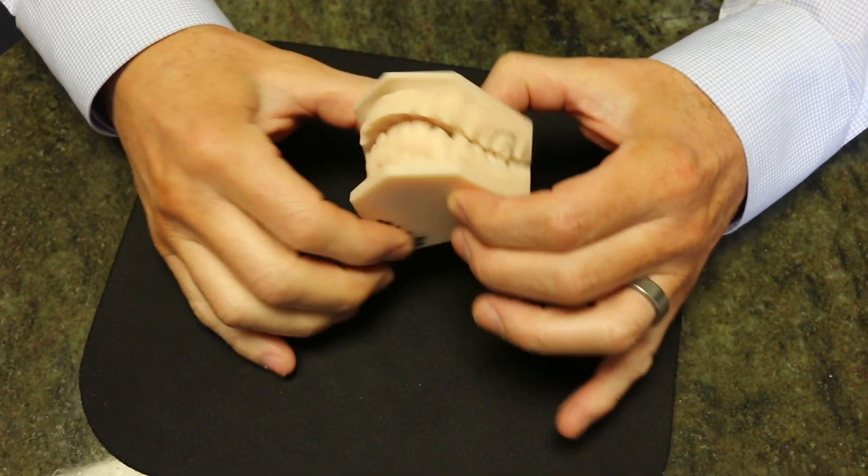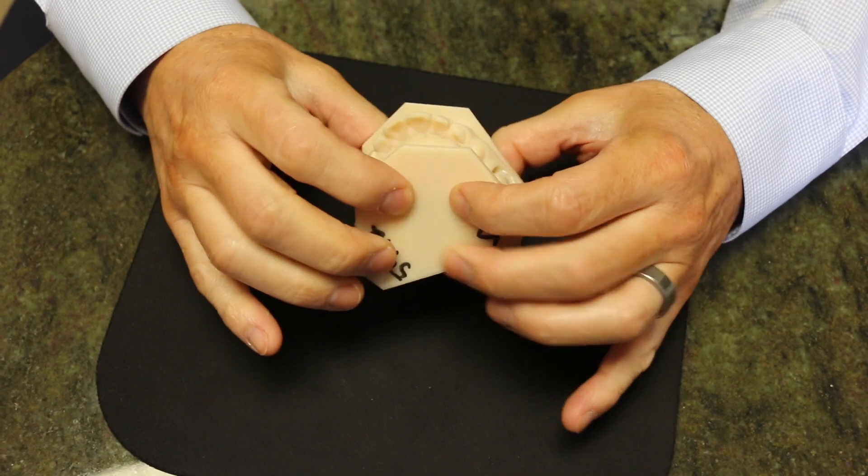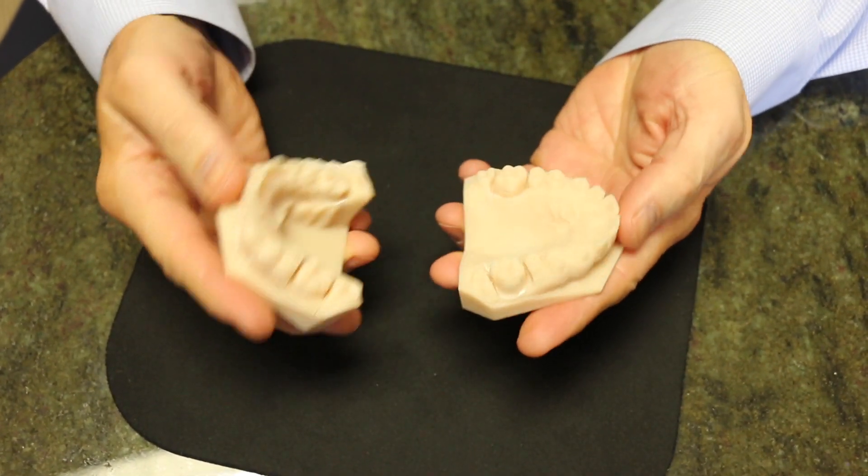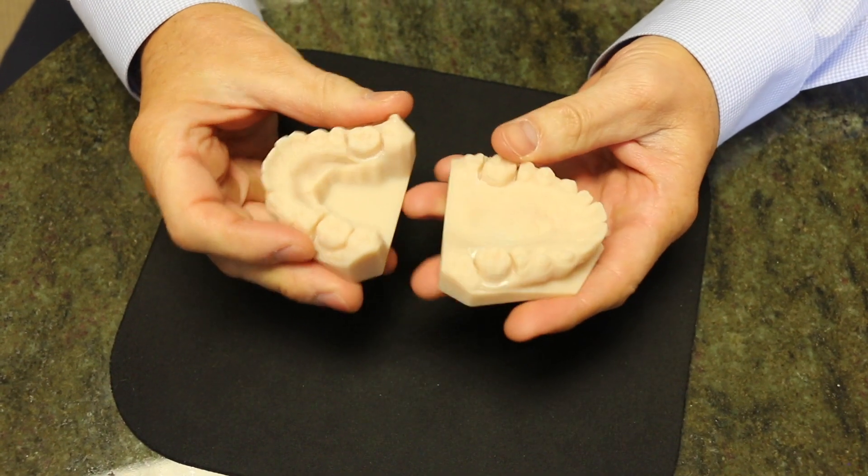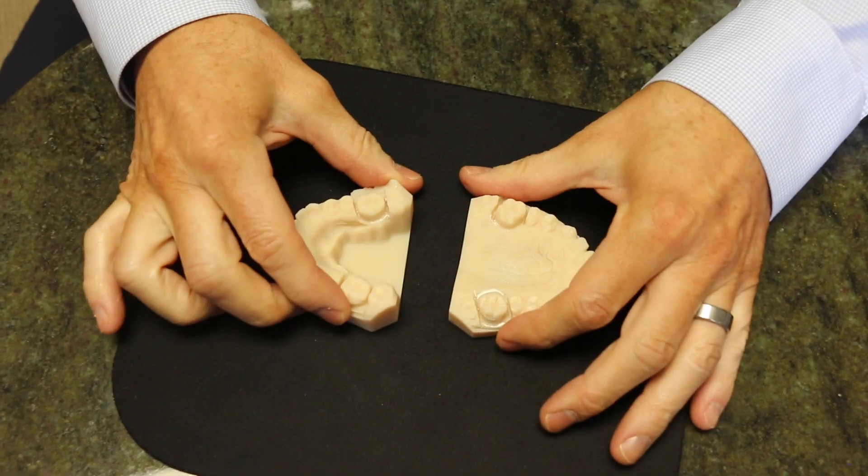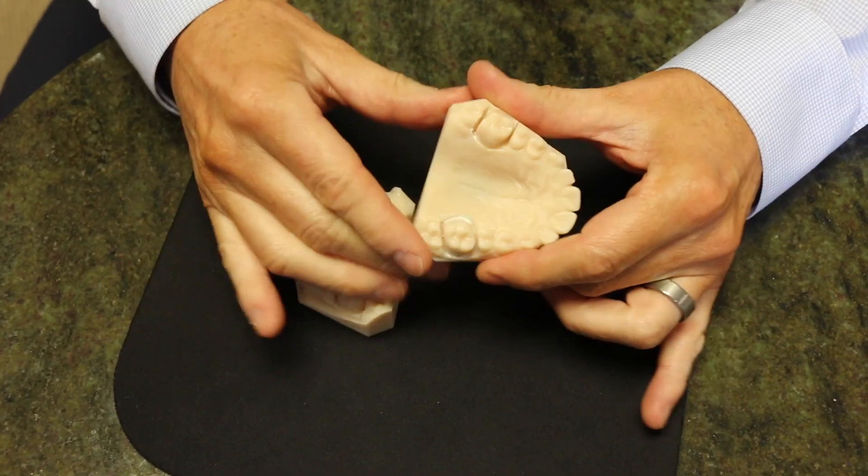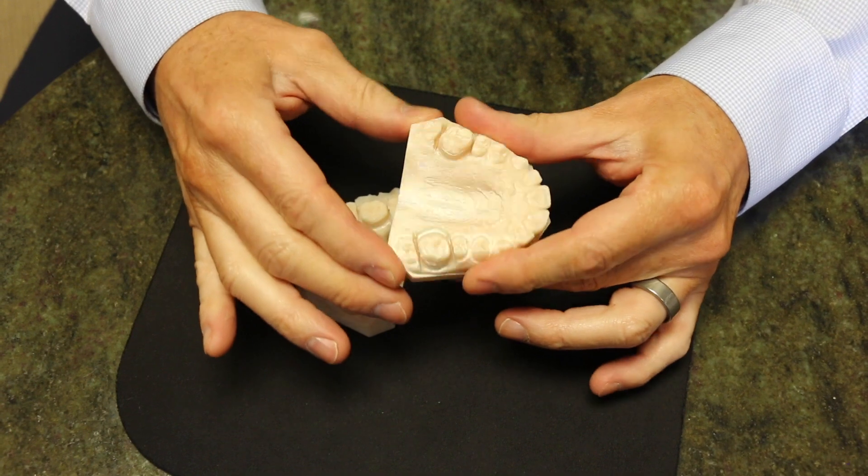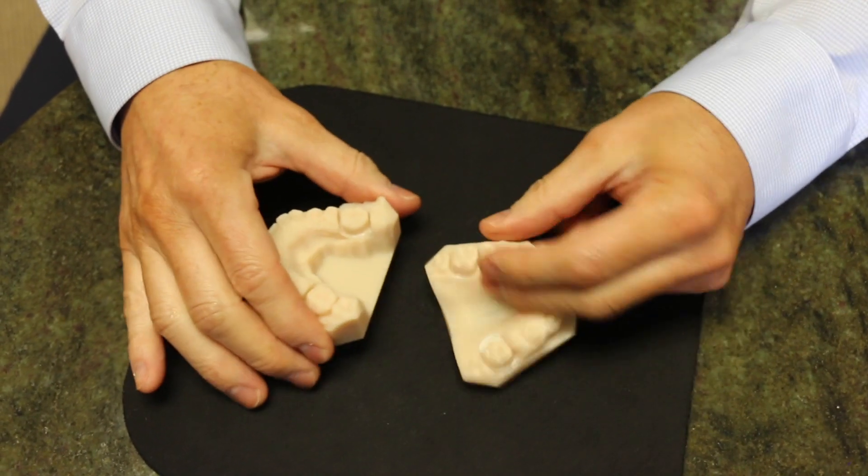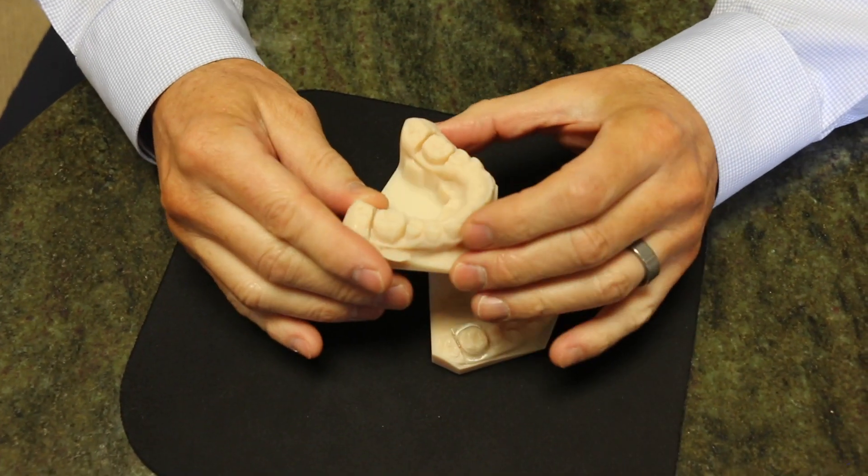Okay, so here we have a set of plastic models that were printed from a scan that we use in my practice. We actually don't take many molds of people's teeth anymore. We use a three-dimensional scanner and then we send the image to a company. They print the models using a 3D printer and then they send them back to us with whatever appliance we need manufactured.